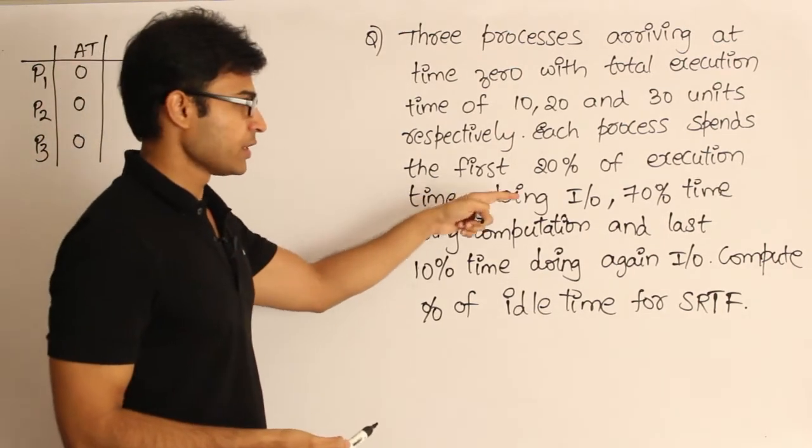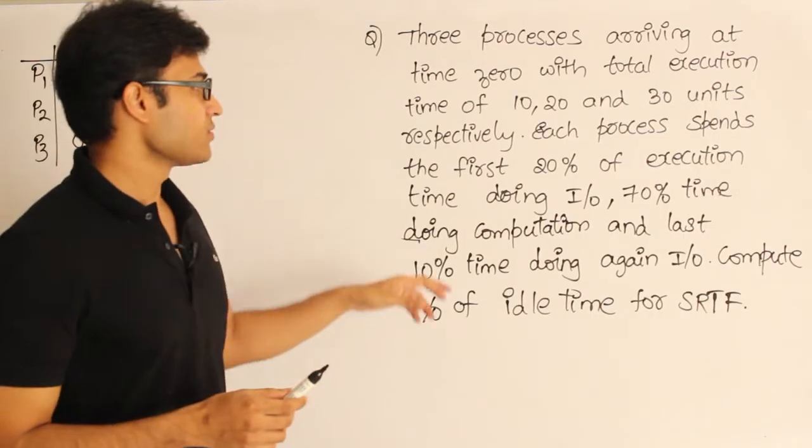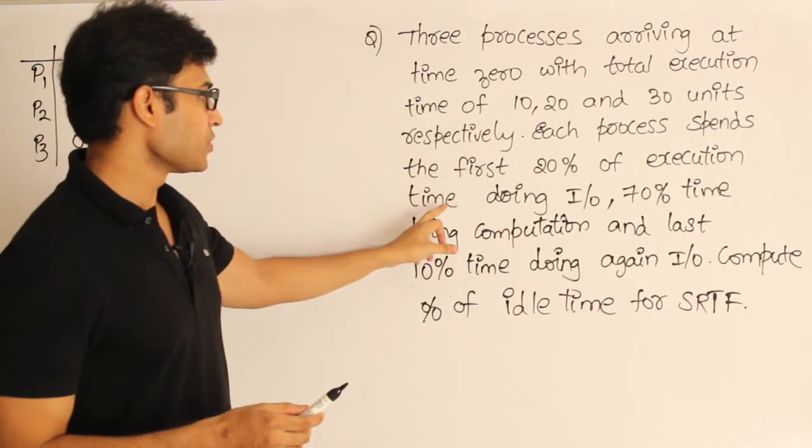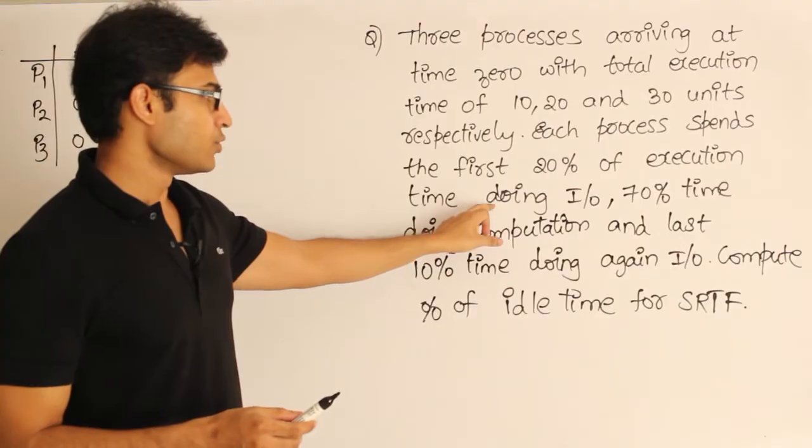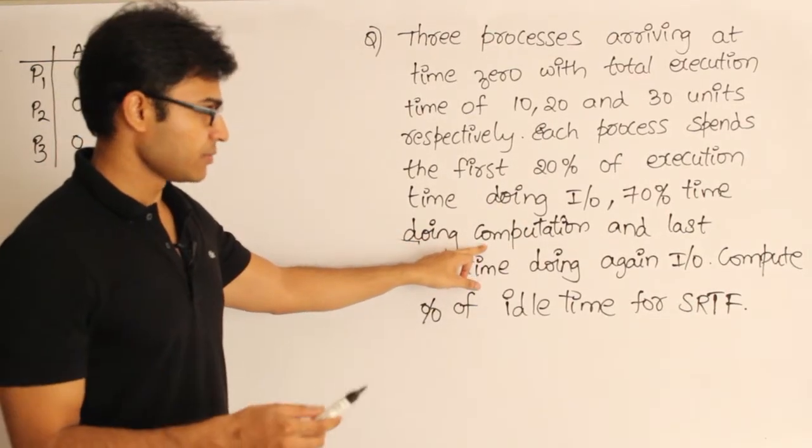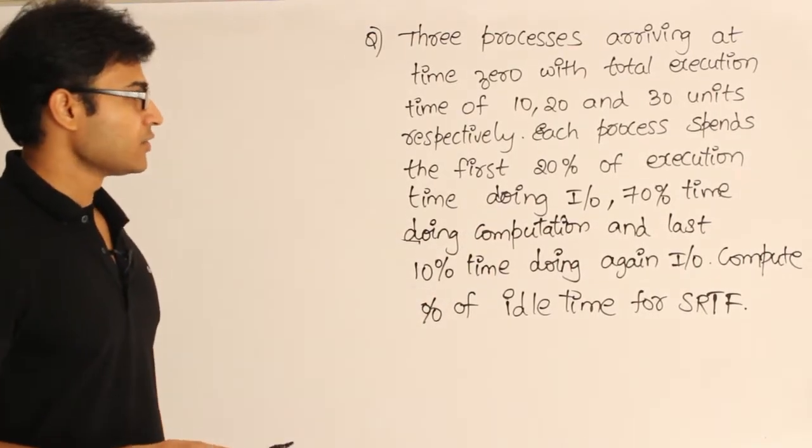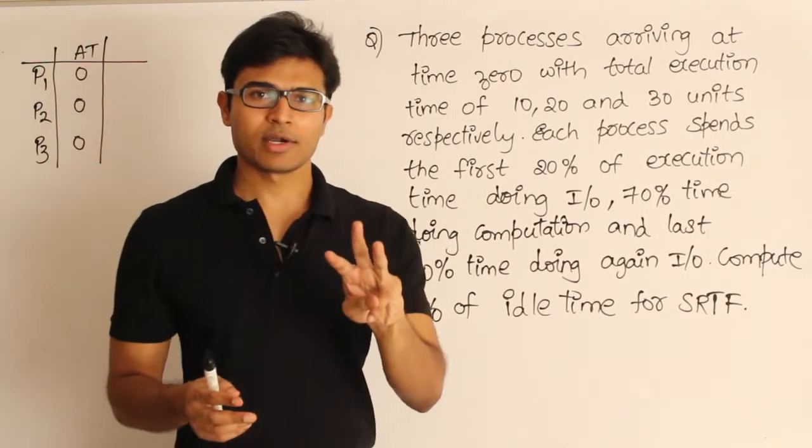This execution time is divided into three parts: first 20% executing I/O, then 70% doing computation at CPU, and then the last 10% again doing I/O. So this execution time has three parts: one part is I/O, then computation, and again I/O.